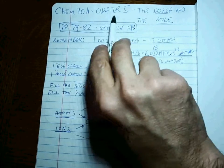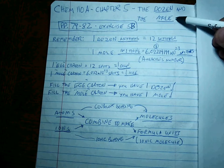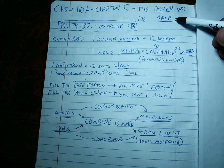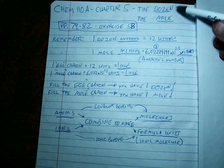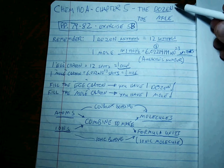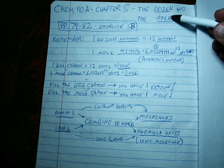Chem 110A, Chapter 5: The Dozen and the Mole — something that often tends to trip people up, but there's really nothing to it. If you know what a dozen is and can do calculations between dozens of eggs and eggs, then you can do the moles.